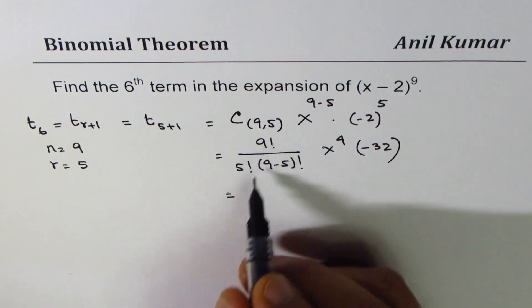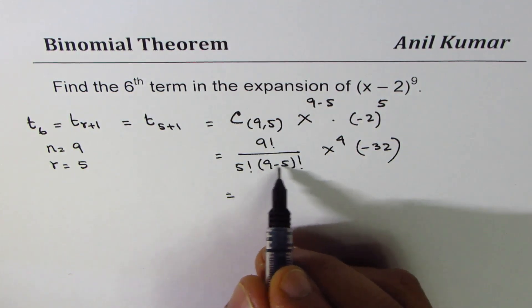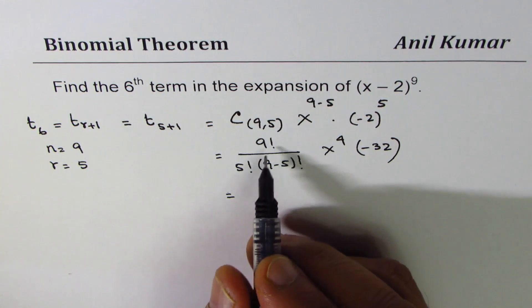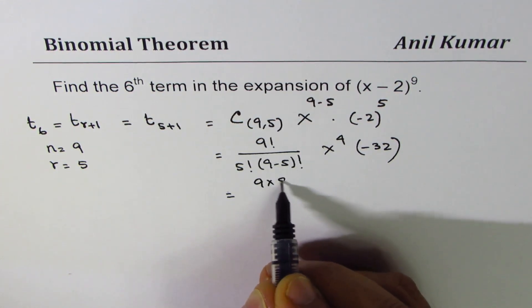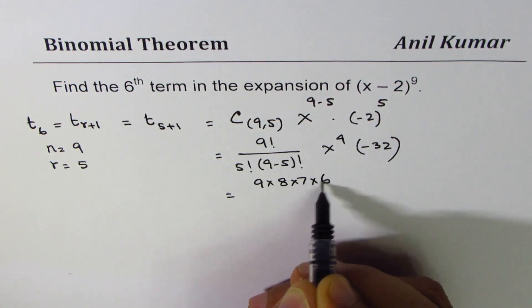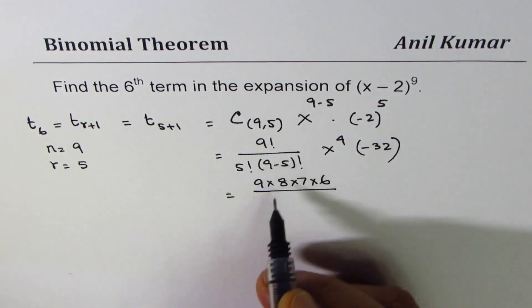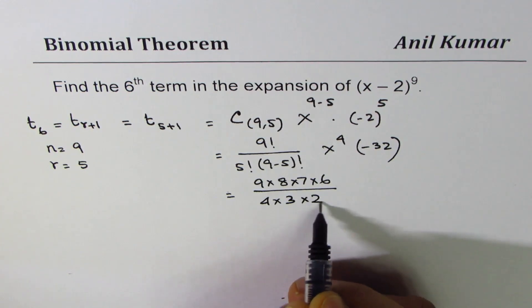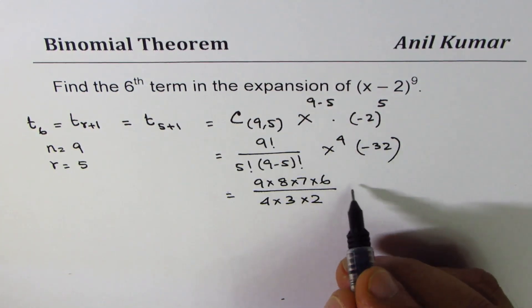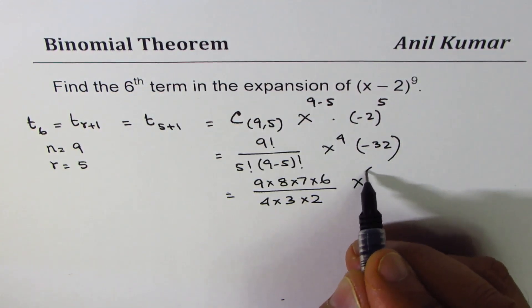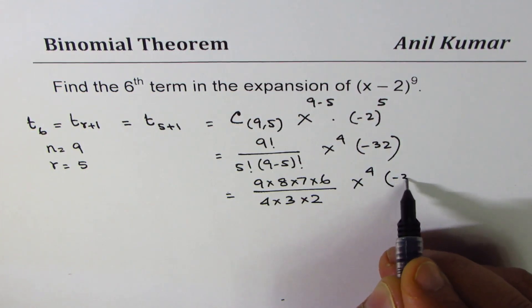9 factorial and this is 4. So what we get is 9 times 8 times 7 times 6 then 5 factorial will cancel and here we have 4 factorial 4 times 3 times 2. And here we have x to the power of 4 times minus 32.